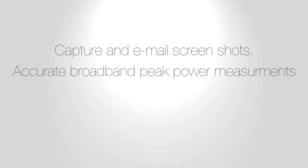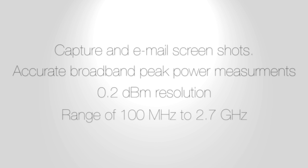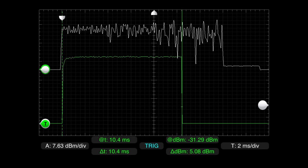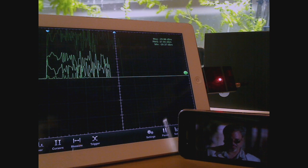Y-Pry Combo makes accurate broadband peak power measurements. With 0.2 dB resolution, you can precisely measure the effects of interference on your network between 100 MHz and 2.7 GHz. Collect a reference level near the access point and compare it with live readings at different locations.